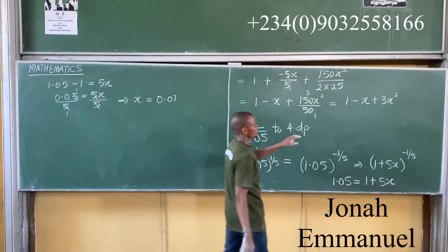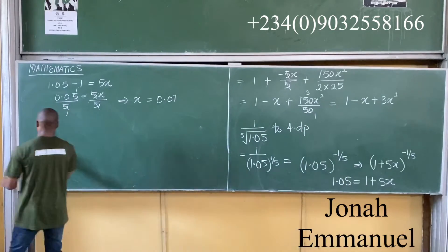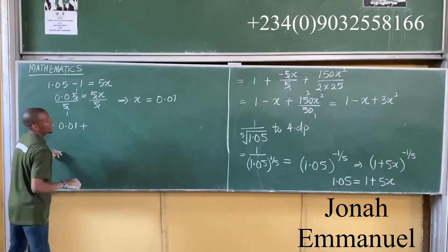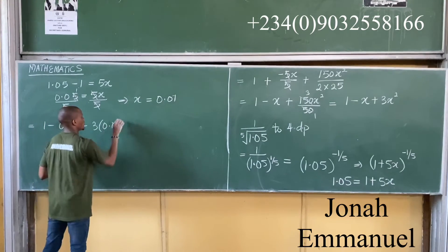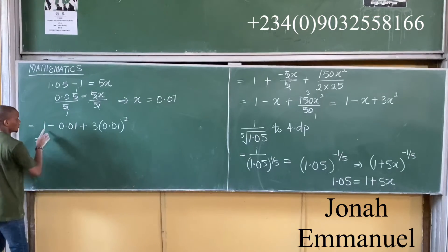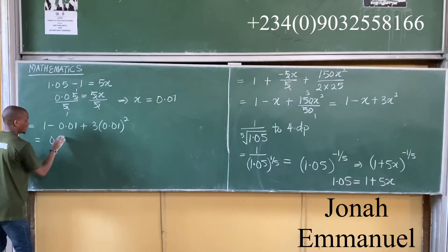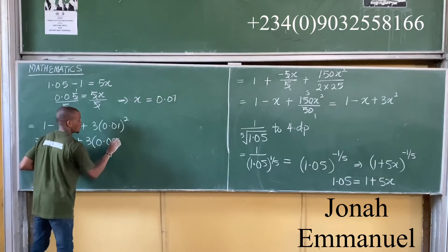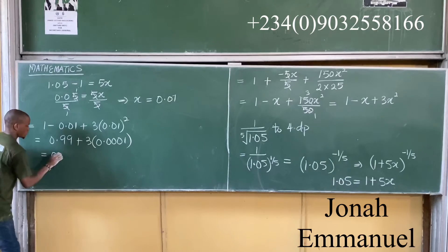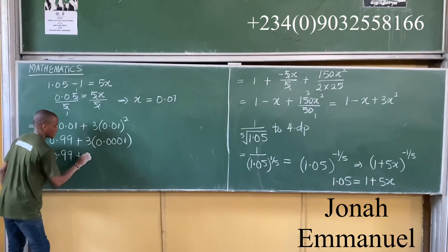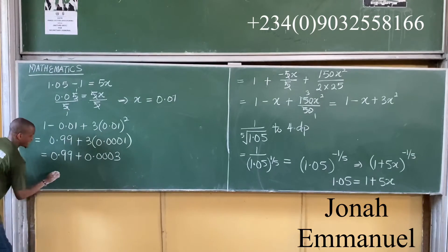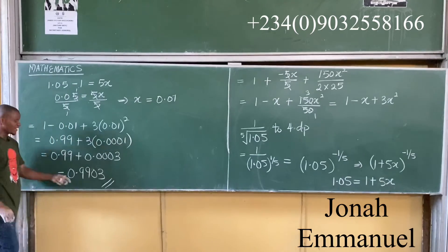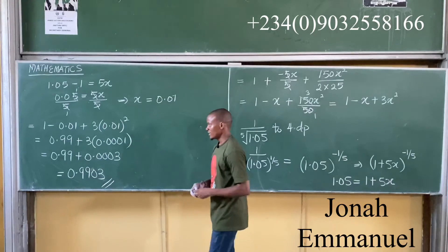I will put the value x equals 0.01 into the expansion. That gives 1 minus 0.01 plus 3 times (0.01) squared, which equals 0.99 plus 0.003, giving 0.9903.